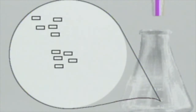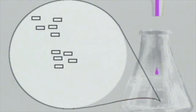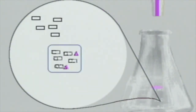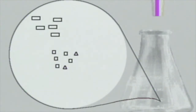In this animation of an oxidation reduction titration, at first we see the purple titrant reacting with the colorless sample. The products of this reaction are clear and colorless, so no change takes place in the sample's appearance.